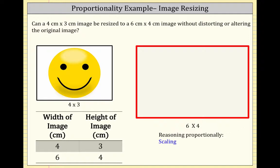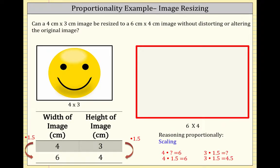Let's begin with scaling. We're trying to figure out: 4 times what is 6? Well, 4 times 1.5 is 6, so the scale factor to keep the picture in proportion would be 1.5. We then need to multiply 3 times 1.5. But 3 times 1.5 is 4.5, and that is not the same as 4. So based on this perspective, we cannot resize the image without distorting or altering it.